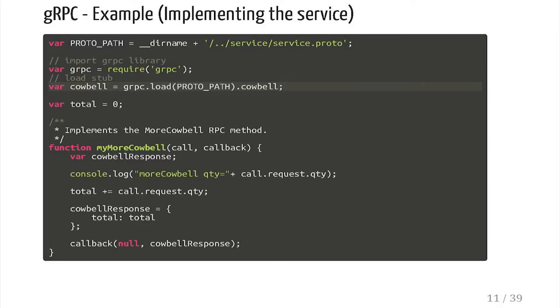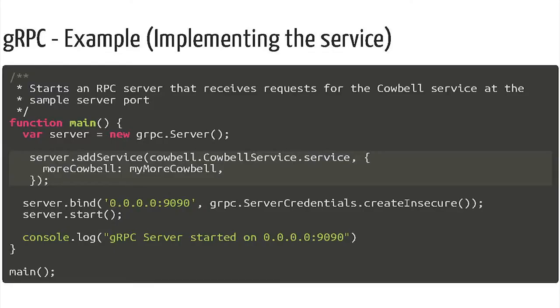On the server side, if you implement it, you basically create your own function, and the concept is you register your function to the service implementation like this. You create a gRPC server, you add the service, and then you tell it what function to use for the service definition. It's basically an interface. And you tell it to start listening on port 9090.